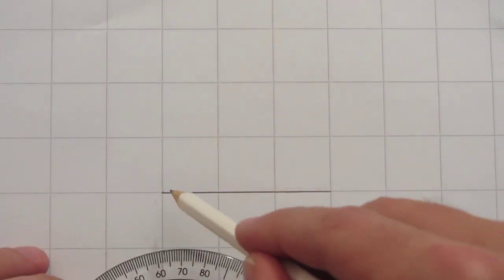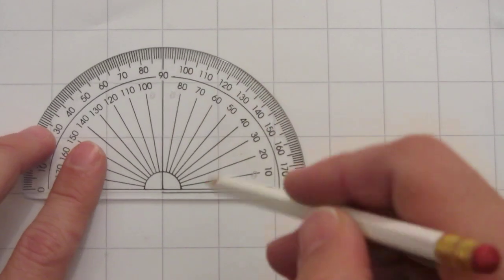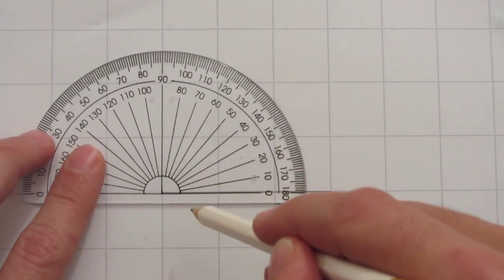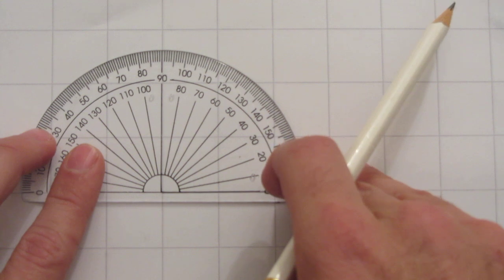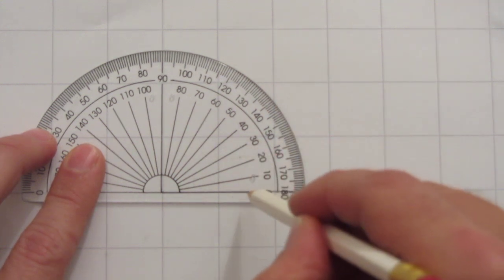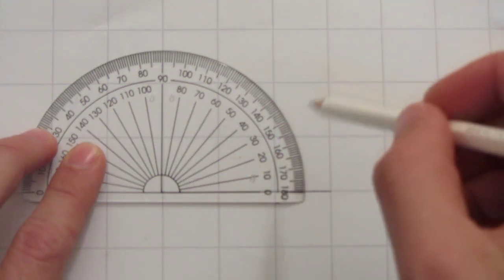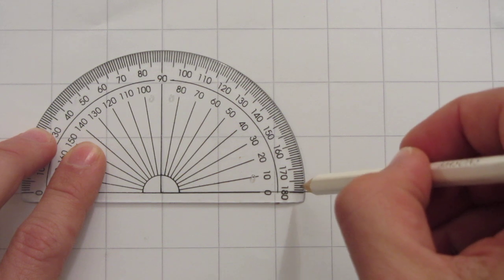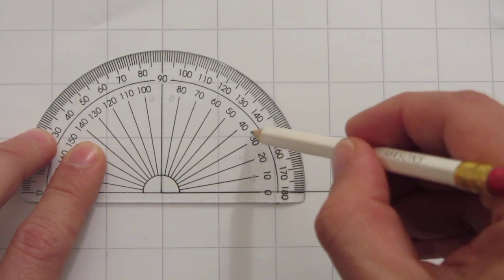When we're going to do ones in this direction, we'll need to put the center of the protractor right here on the left-hand end of the line and the zero line on top of the pencil line. Then I can choose any of these 10-degree increments.